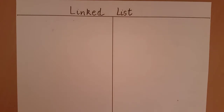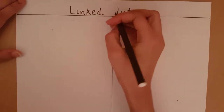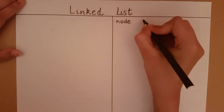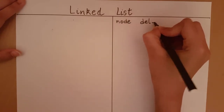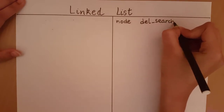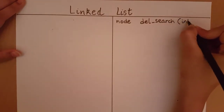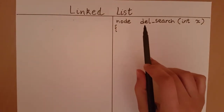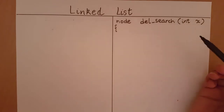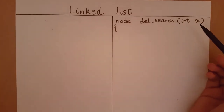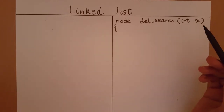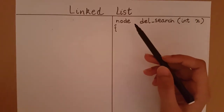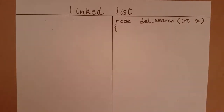Let's start by defining the function. In this function called del_search, I'm taking x as my input parameter — the element I would like to delete from the linked list. I will return a variable of type node, because I am going to be returning the node at which I will delete x from.